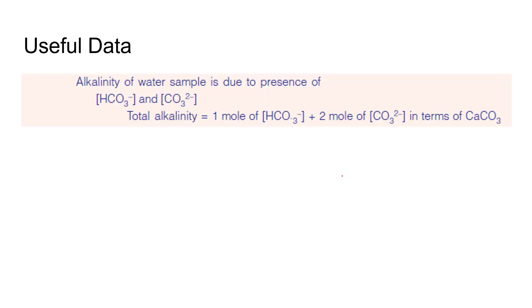They have told that we have to neglect the alkalinity of H plus and OH minus ions, so this will be completely mentioned in terms of calcium carbonate. Alkalinity of water sample is due to presence of HCO3 minus and carbonate ion. Total alkalinity will be 1 mole of HCO3 minus plus 2 mole of CO3^2- in terms of calcium carbonate.